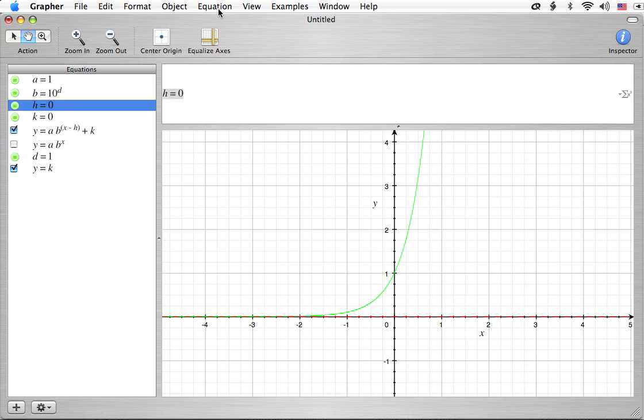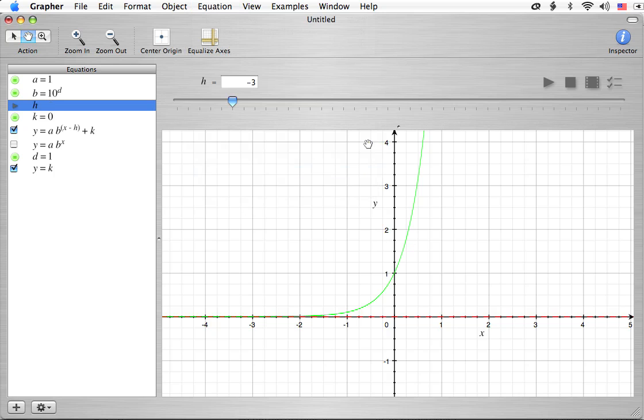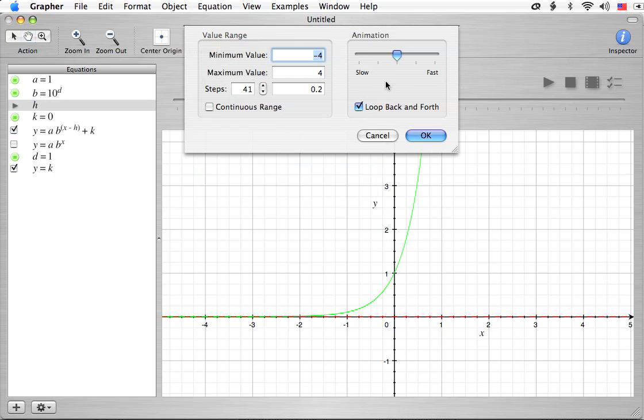Alright, so let's get started. Let's go ahead and animate h. Now if you've watched a number of the other videos you pretty much have an idea of what's going to happen already. Wow, this is even set up already and it almost never happens. Negative 4 to 4 by 41 steps, that's going to give us steps of 0.2.